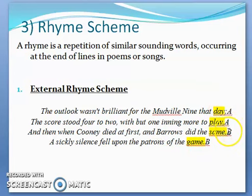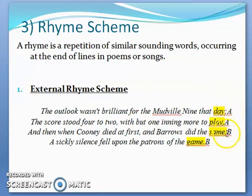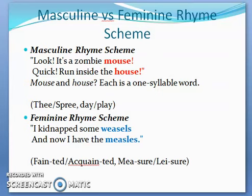In external rhyme scheme you can also have an alternate rhyme scheme, in which the first line rhymes with the third line and the second line rhymes with the fourth line. There are also stanzas in which all four lines rhyme together, giving a rhyme scheme of AAAA. There are different types of rhyme schemes coming within the external rhyme scheme.